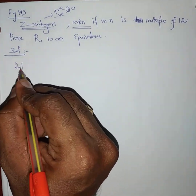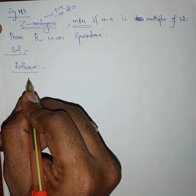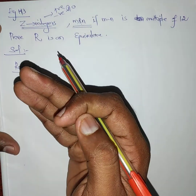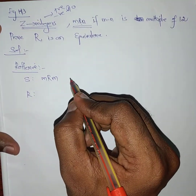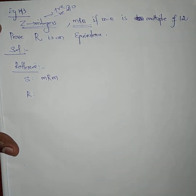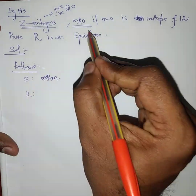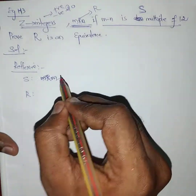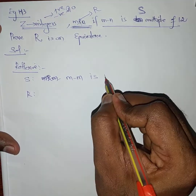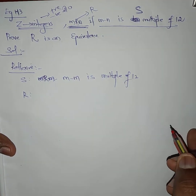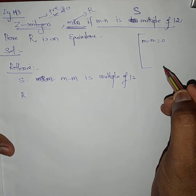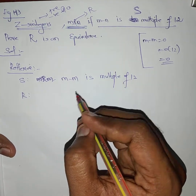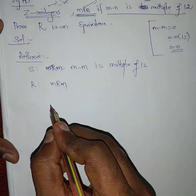First, we show reflexivity. For reflexive, we write the statement: m relates m. The statement means m minus m is a multiple of 12. Since m minus m equals zero, and zero equals 0 times 12, zero is a multiple of 12. Therefore m relates m, so reflexive is true.